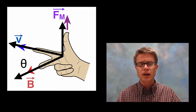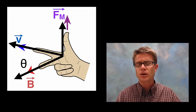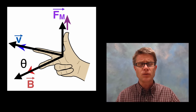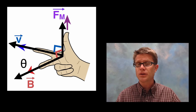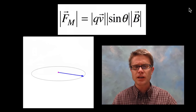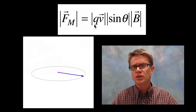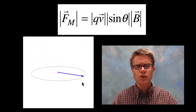The angle between the velocity and the magnetic field is not always 90 degrees — we call that theta — and depending on what it is, we get a different amount of magnetic force. Here's our equation: Q times V cross B. Q is the charge, V is the velocity, and this is a cross product between the two. Let's watch the animation before we get to the sine of theta.